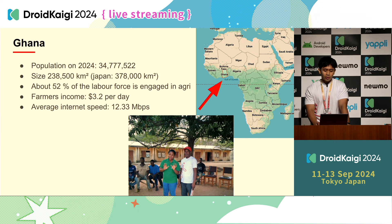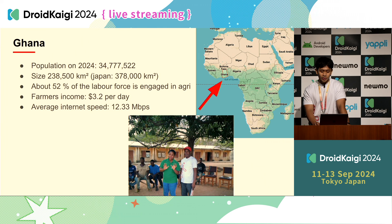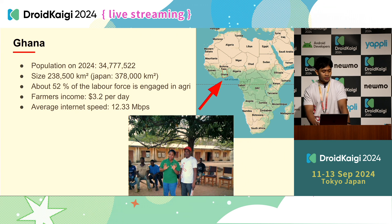Before we talk about our offline-first app implementation, let me introduce Ghana and the Ghana farmer community. Ghana is a country in Africa. The population is around 35 million people and its area is almost one third of Japan. 52% of people are working in agriculture, and on average the farmer income is $3.2 per day and the internet speed is 12 megabits per second.